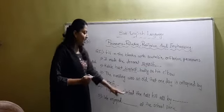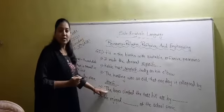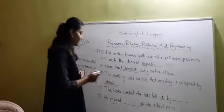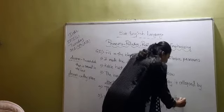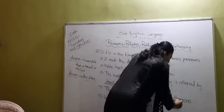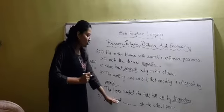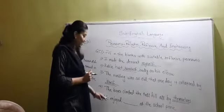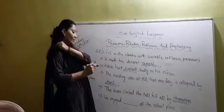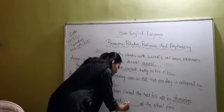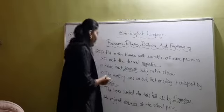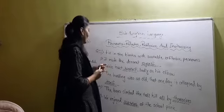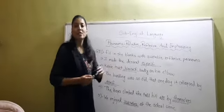Fourth sentence: the boys climbed the tall hill all by themselves. We are talking about boys — a plural — so we use 'themselves'. Fifth sentence: we enjoyed ourselves at the school picnic. For 'we' we use 'ourselves'. So these are the five answers; the remaining five answers you have to find out by yourself.